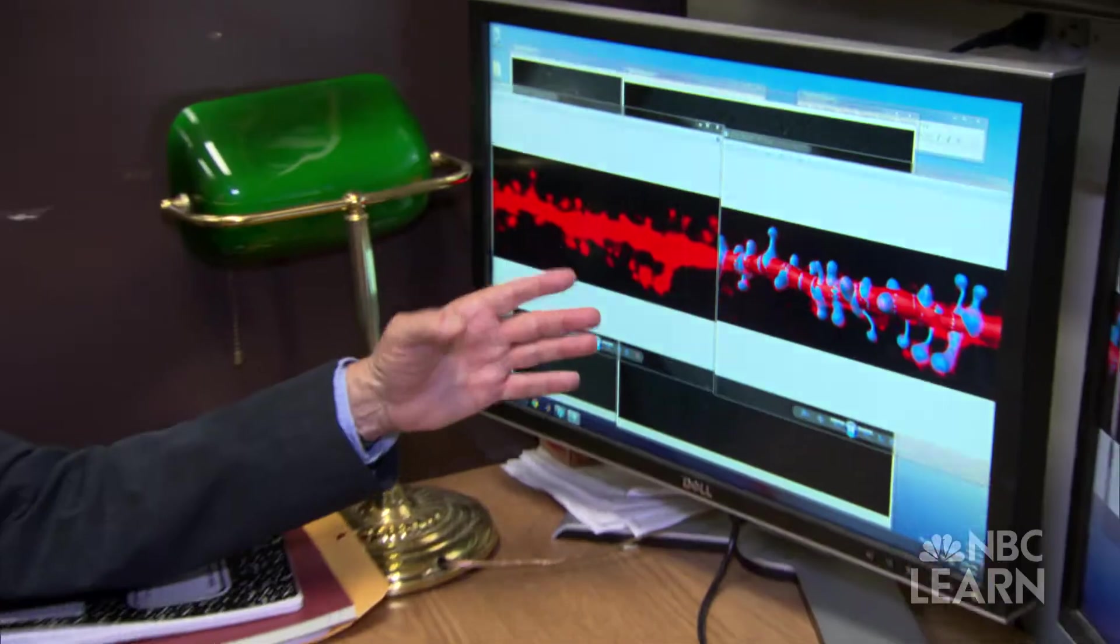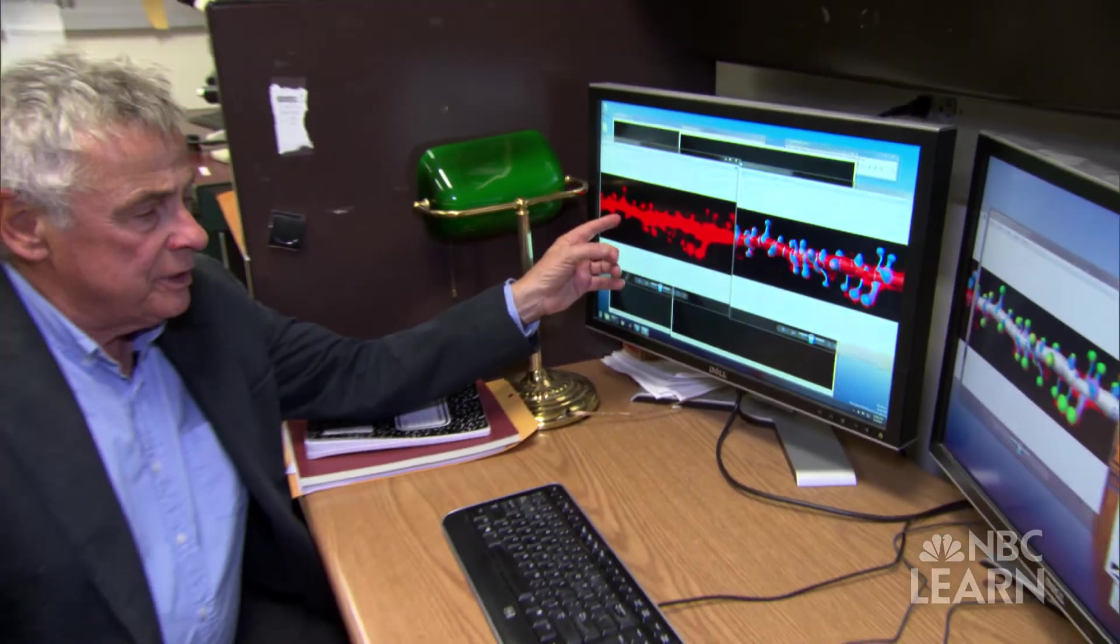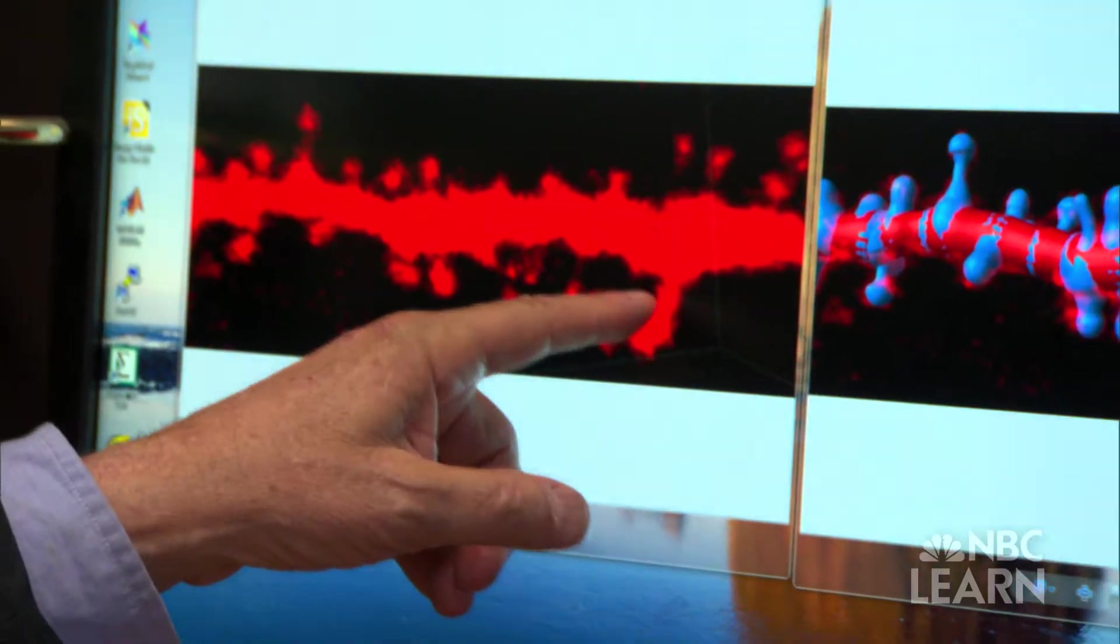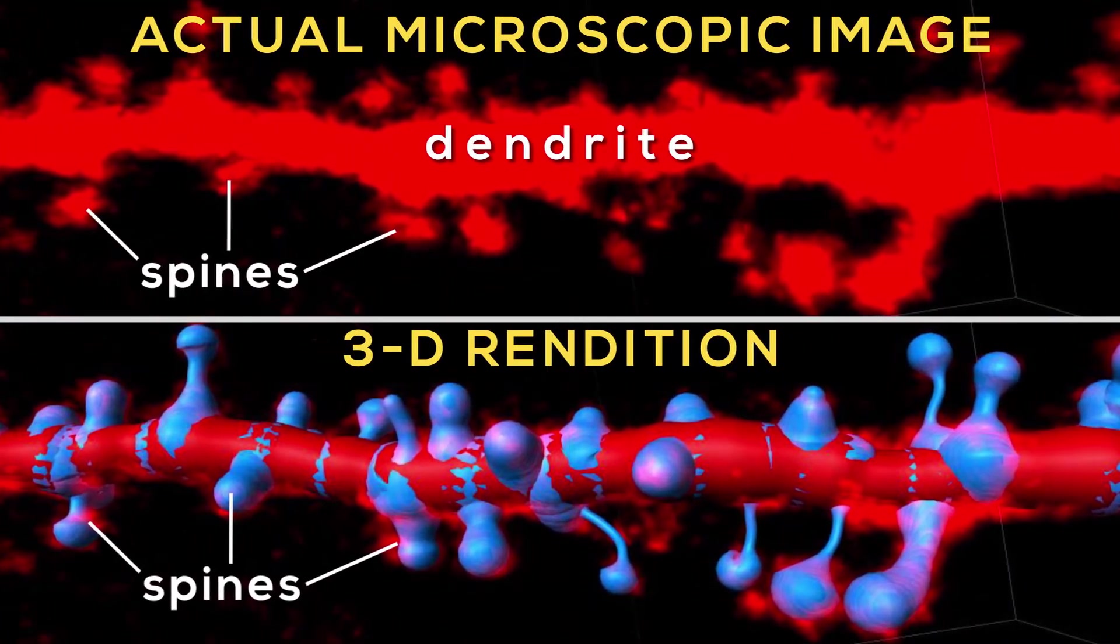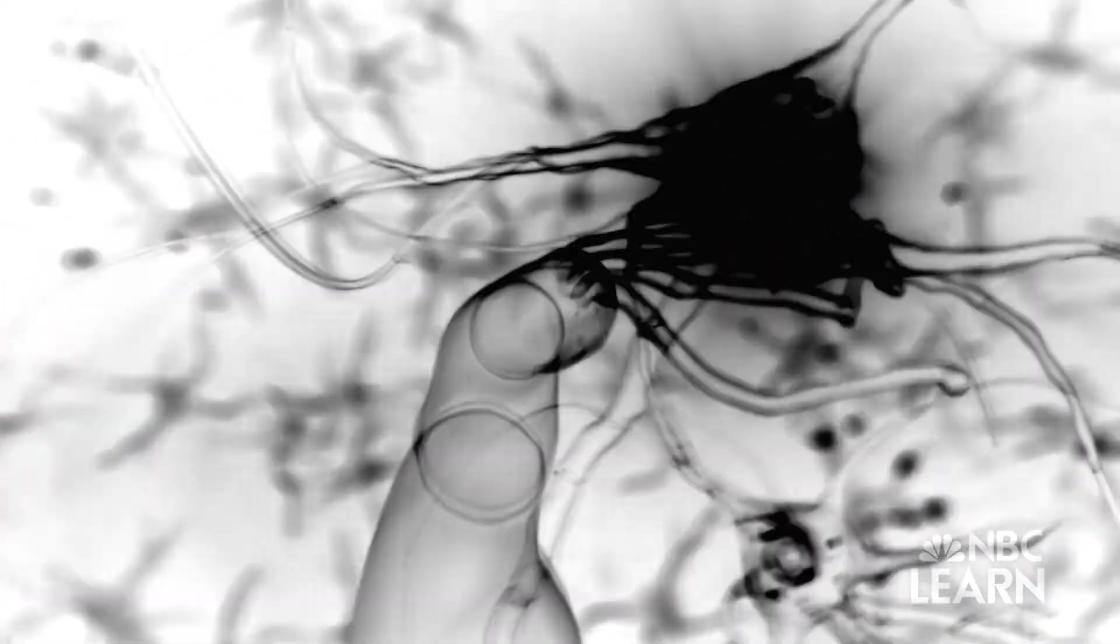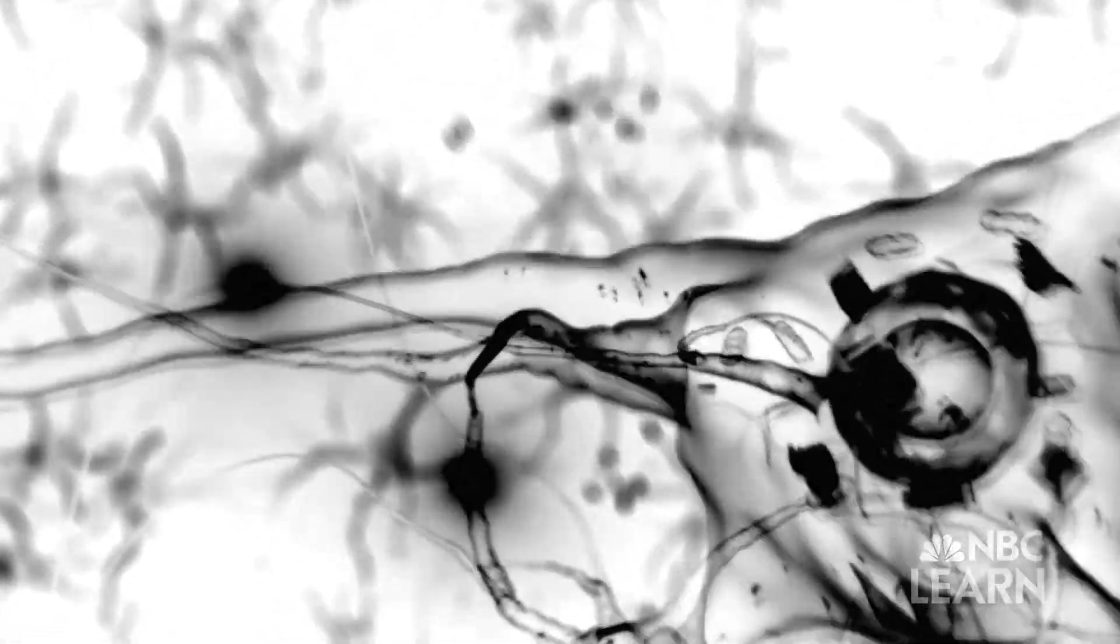Lynch explains this is because the dendritic spines are changing shape, allowing for stronger synaptic communication. When it sends that message, this spine, this dendritic receiver, morphs. And if everything goes right, it will morph into a state that forever afterwards, when the message comes, it generates a bigger voltage.